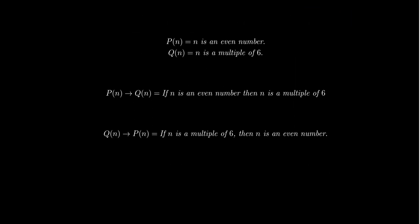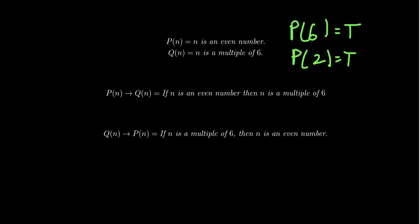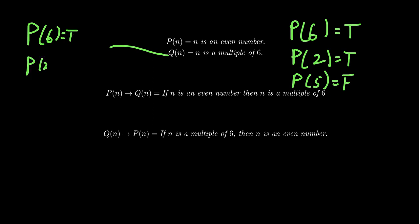Now consider the earlier examples with variables. Let P(N) be the primitive 'N is an even number' and Q(N) be 'N is a multiple of 6,' where N is the variable. The truth value depends on N: P(6) is true, P(2) is true, P(5) is false. Similarly Q(6) is true, Q(2) is false, Q(5) is false. We can think of open statements as boolean functions — they take an integer input and output true or false.